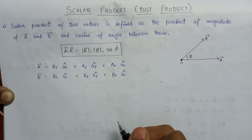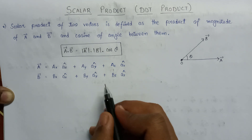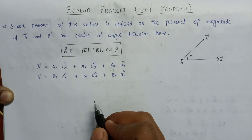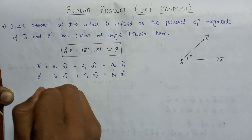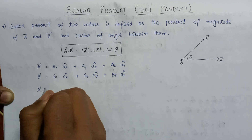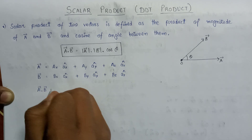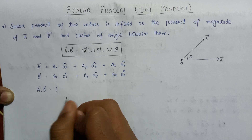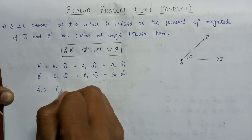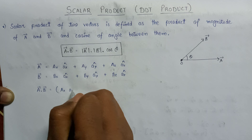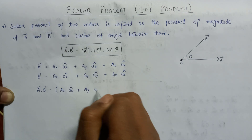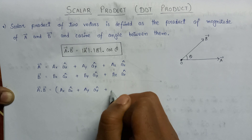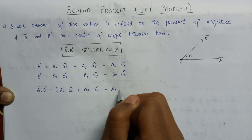On substituting the values in the above expression, we get A vector dot B vector equals (Ax x-cap plus Ay y-cap plus Az z-cap) dotted with the corresponding components of vector B.